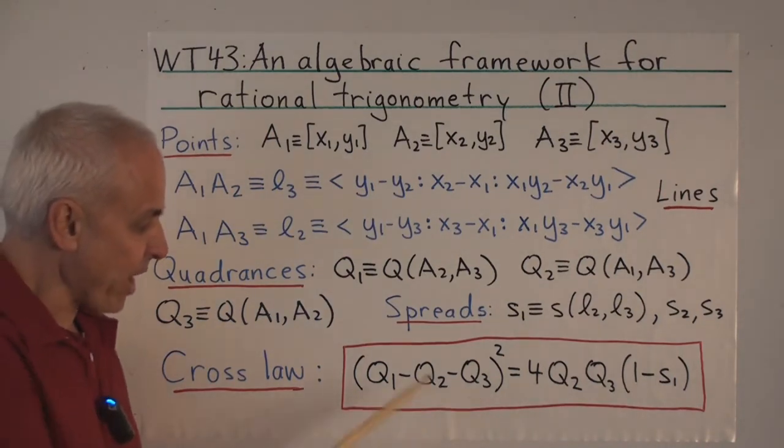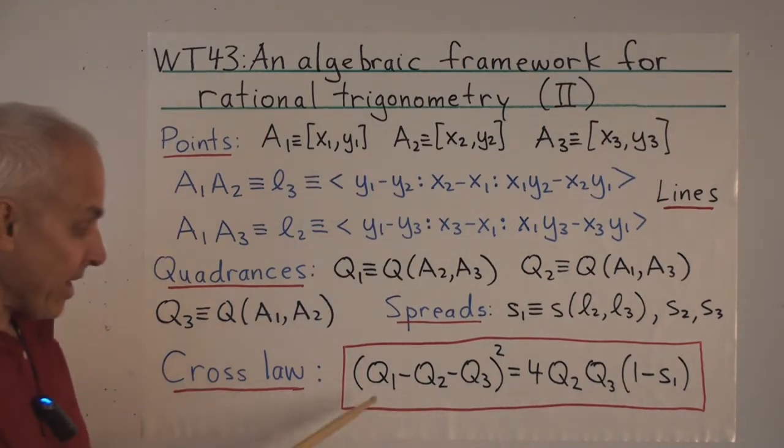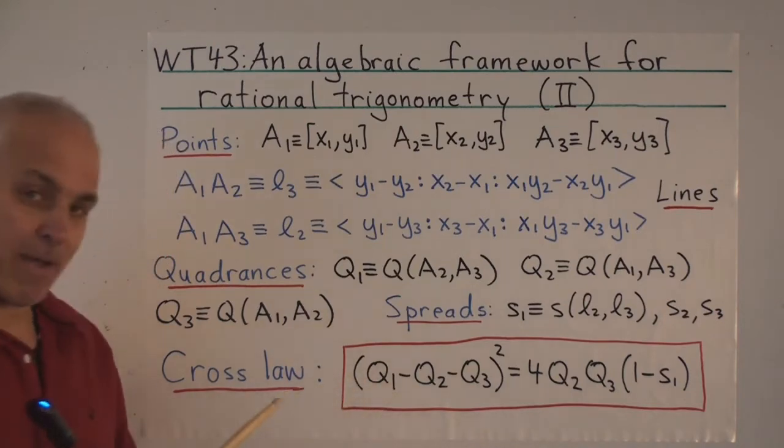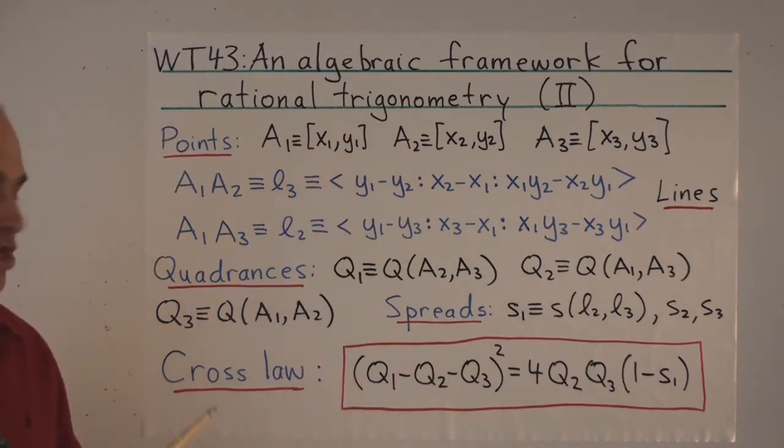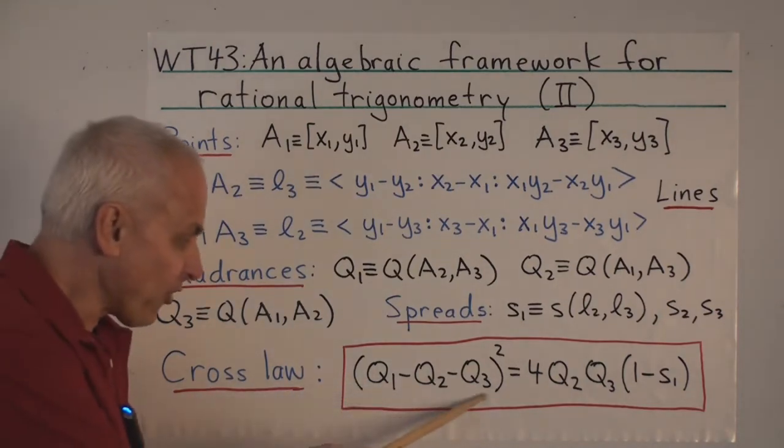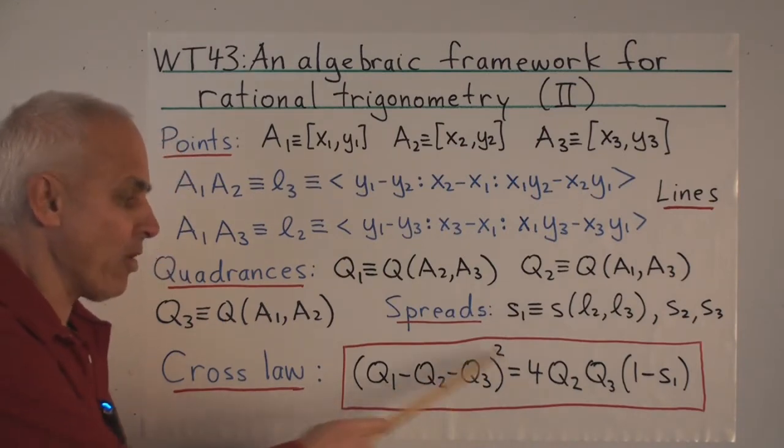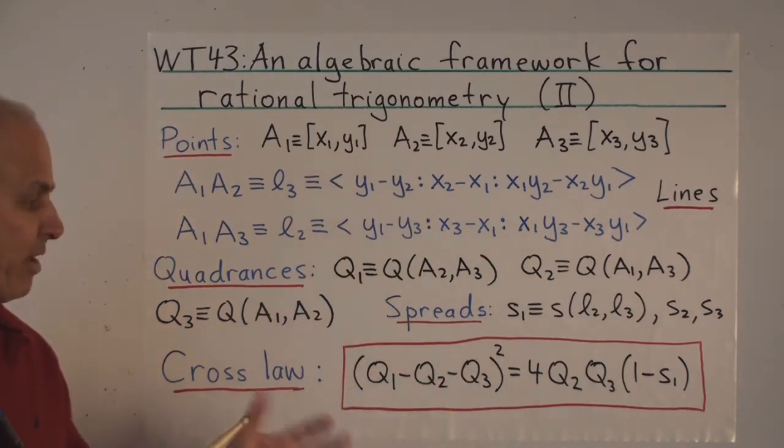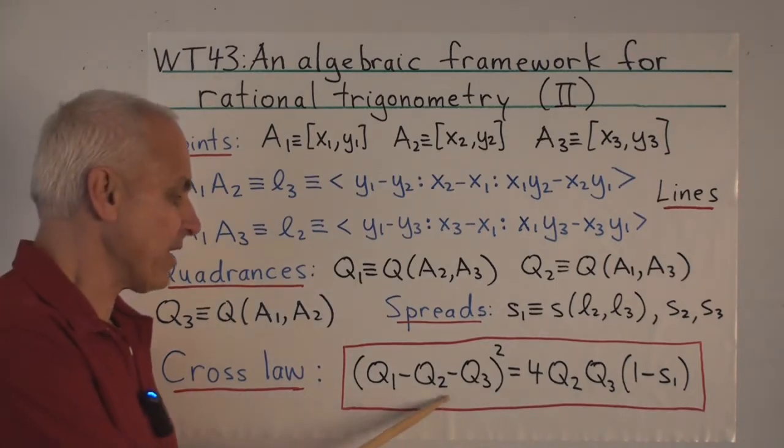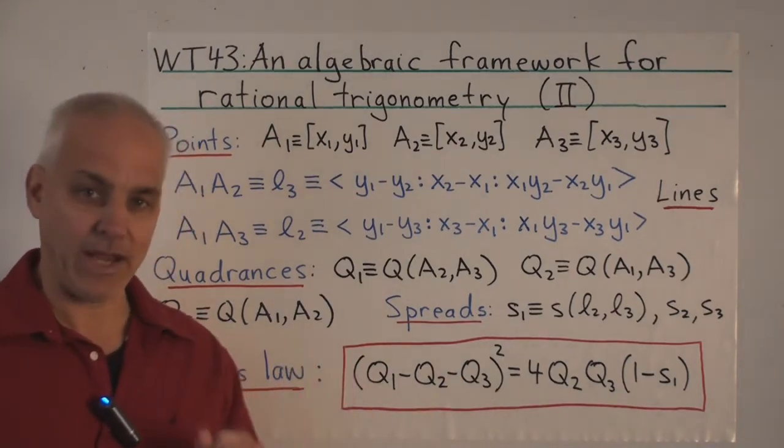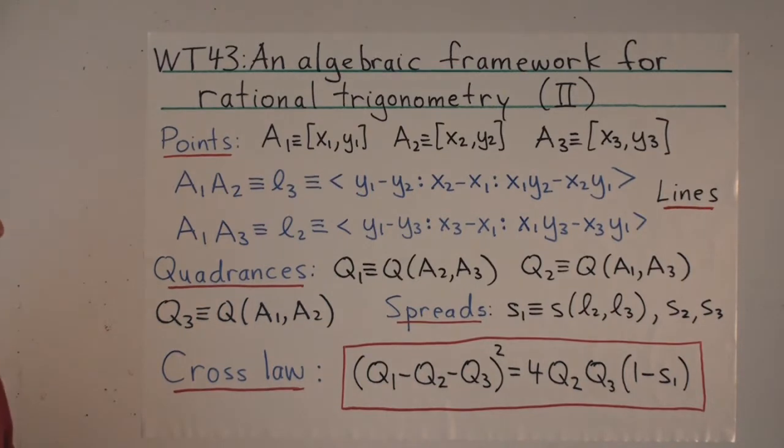The left-hand side being a square means that we can rewrite it by multiplying what's inside by minus 1 if we want to. It doesn't change. So sometimes we'll also write this as (Q2 + Q3 - Q1)² squared. It's purely a matter of taste whether we write it this way or the other way. And we won't stick to any one way as being preferable.